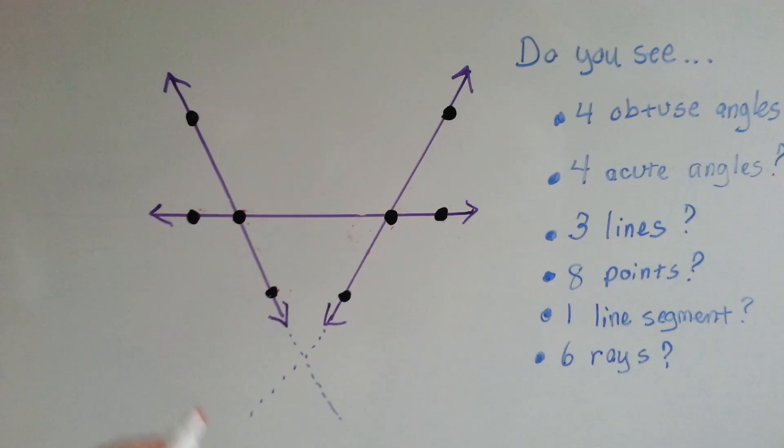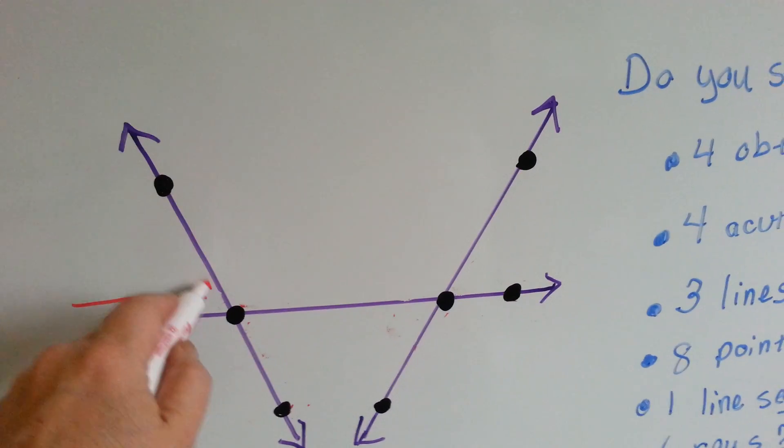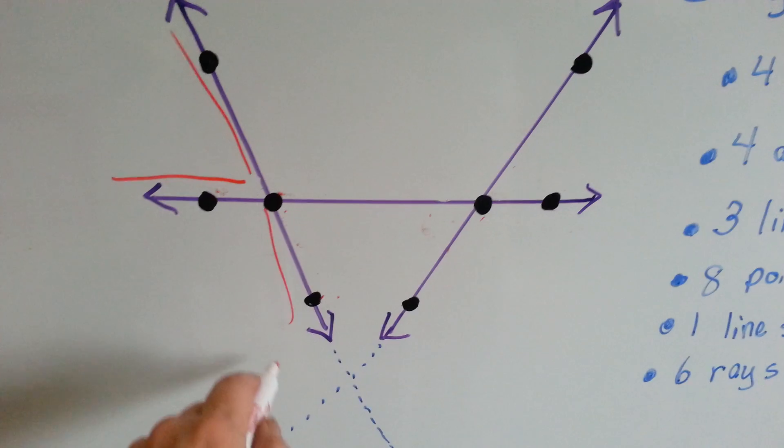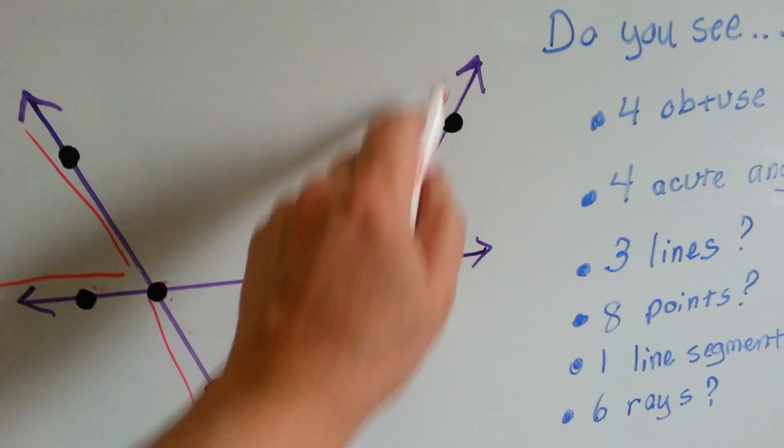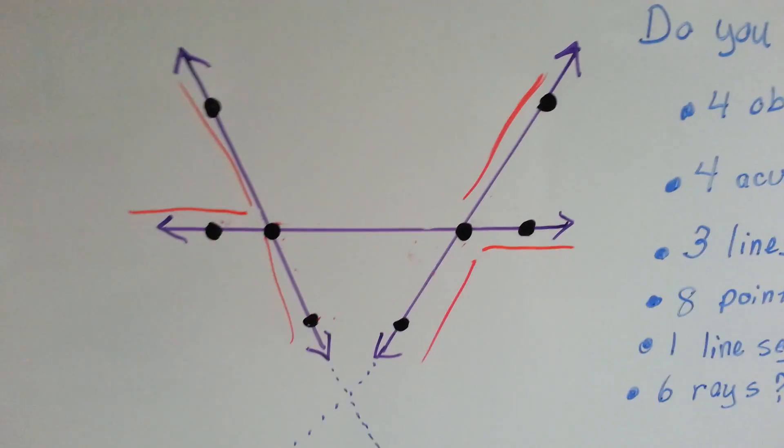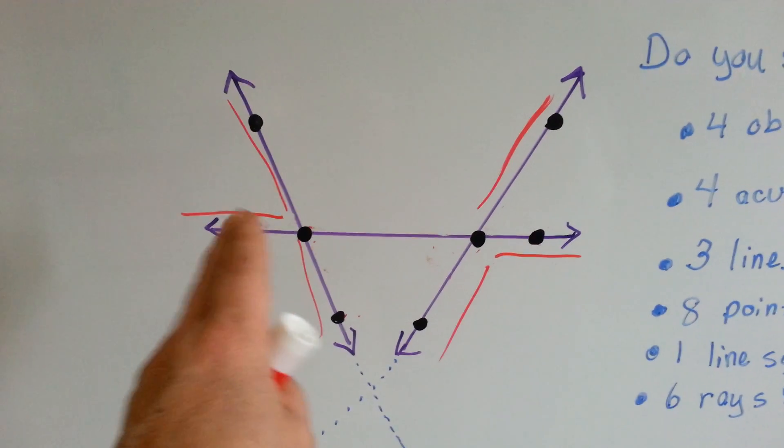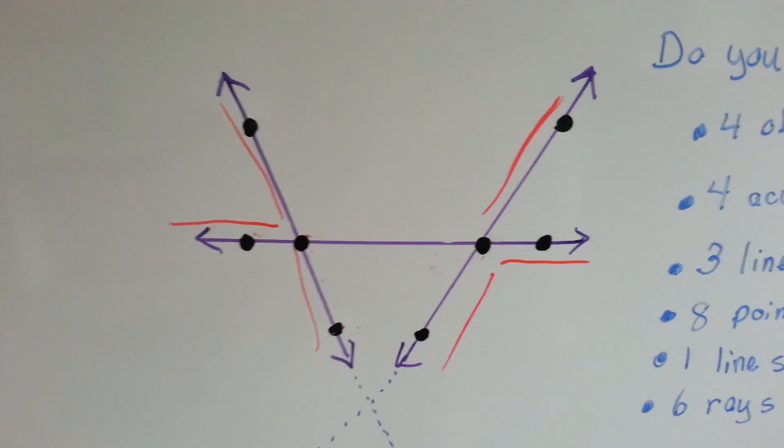There's six rays. There's a ray coming this way. There's a ray going up this way. There's a ray coming down here. There's a ray here. There's a ray here. And there's a ray coming down there. That's our six rays. Imagine them heading out that way.